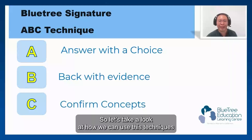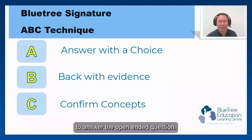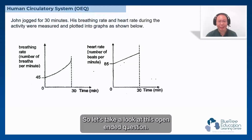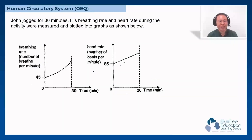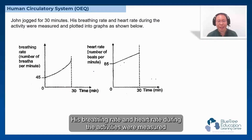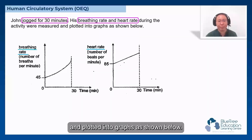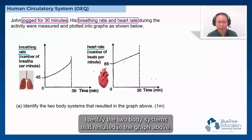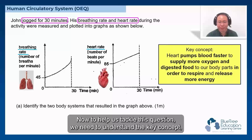Let's take a look at how we can use these techniques to answer the open-ended question. Here is the question: John jogged for 30 minutes. His breathing rate and heart rate during the activities were measured and plotted into graphs as shown. Identify the two body systems that resulted in the graph above.